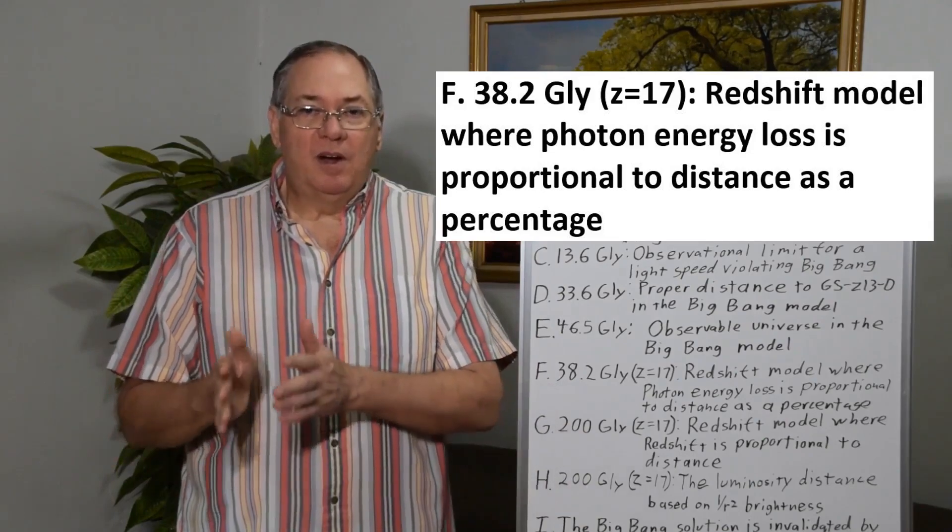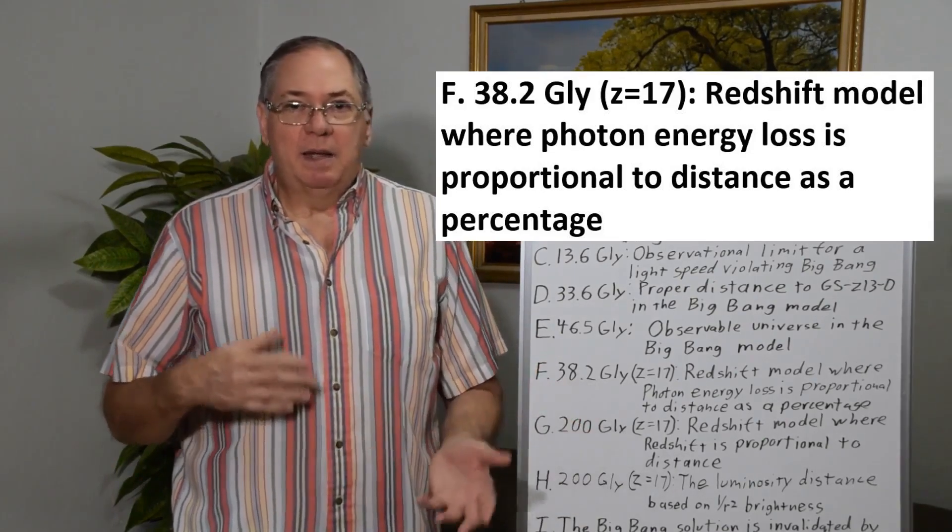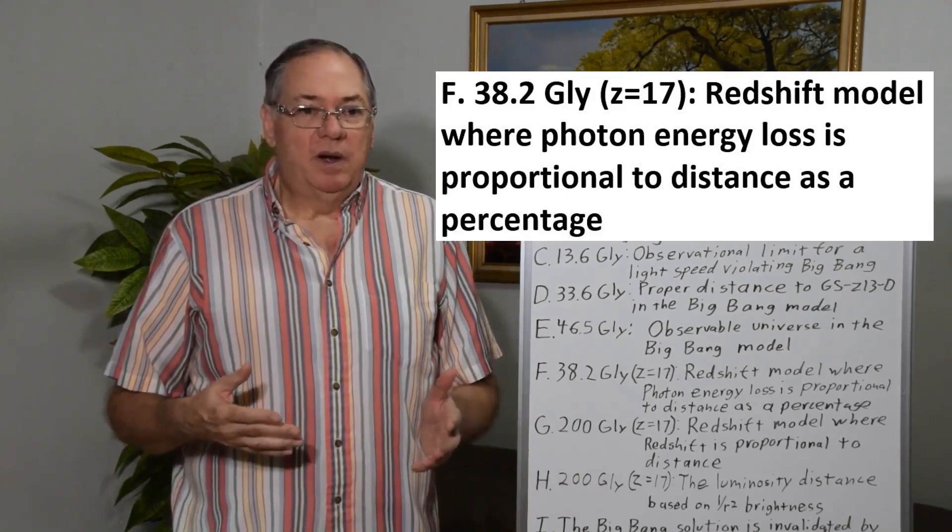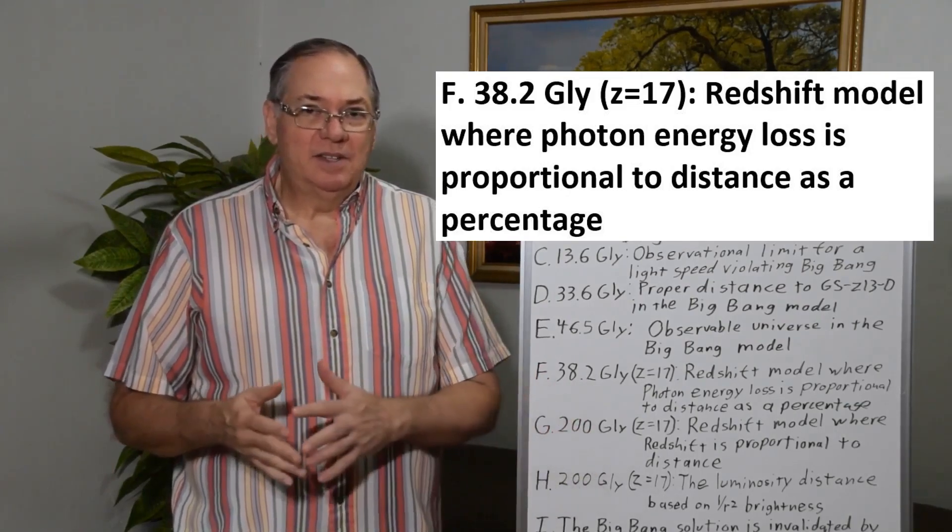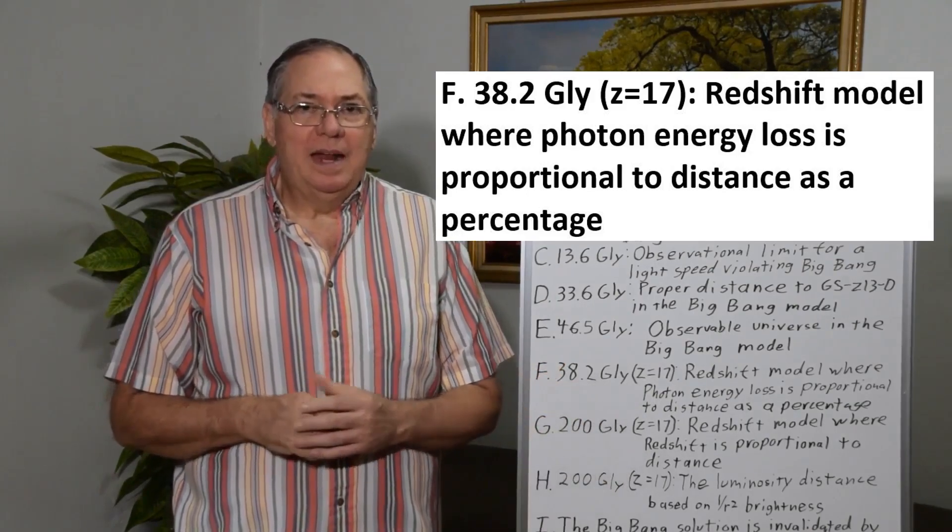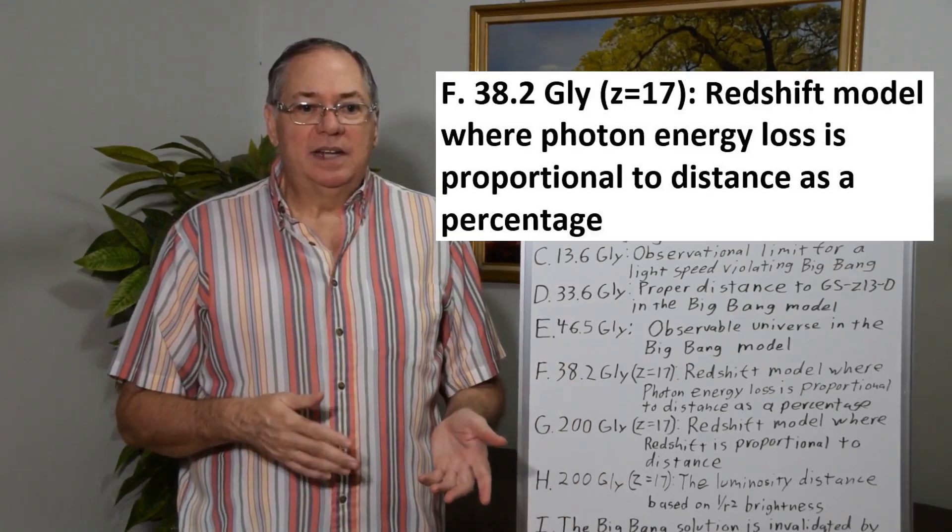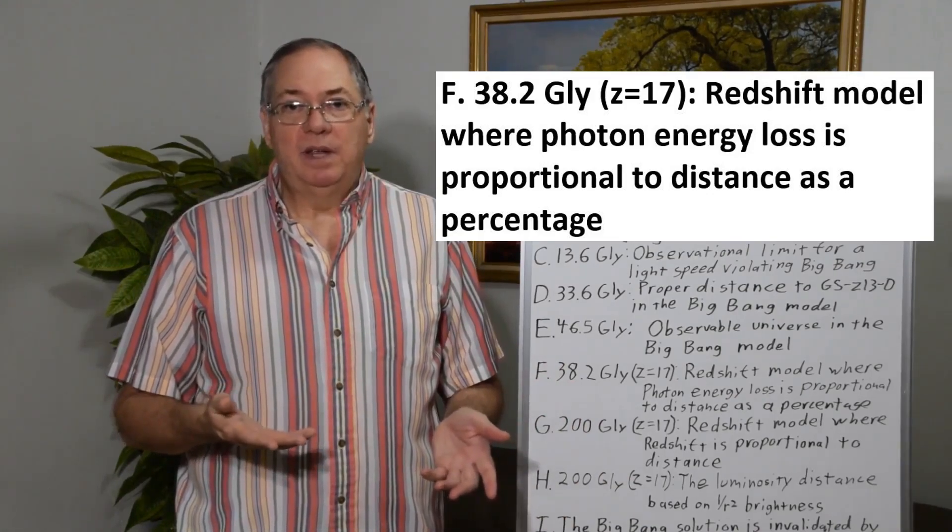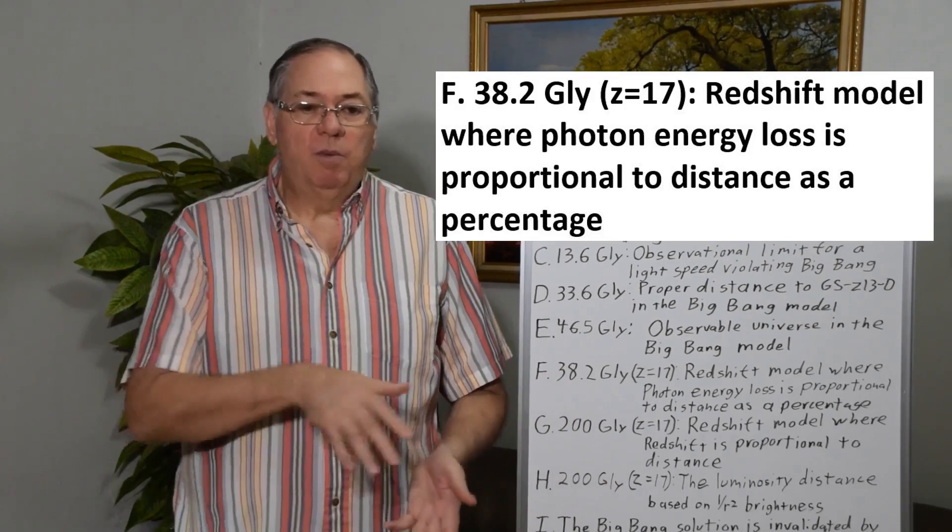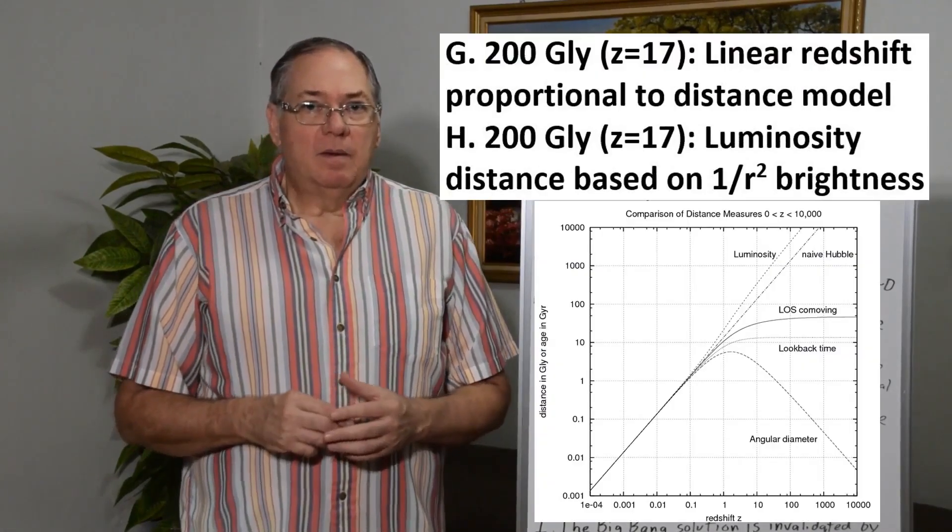But if you are doing that incrementally at each distance, it's like compounding interest where it multiplies a lot faster than simply adding up the percentage. And in that case, a Z equals 17 galaxy is 38.2 billion light years away, according to one approximation I use that I'll link to.